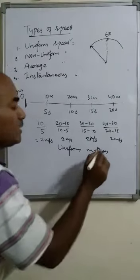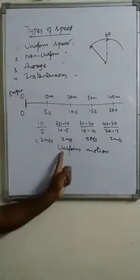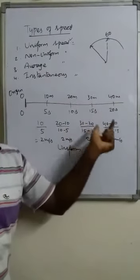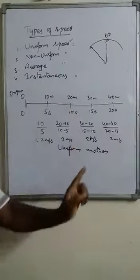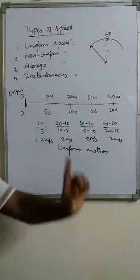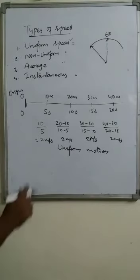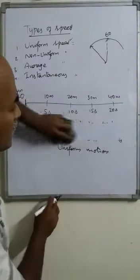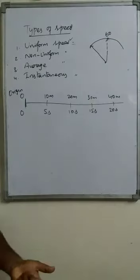This is how uniform motion is defined. When an object covers equal distance in equal intervals of time, it is said to be in uniform motion. We can also define it this way: if an object travels with the same speed or constant speed throughout the motion, it is said to be in uniform speed or uniform motion. Now, coming to non-uniform motion. From the word itself, we can say the speed is not constant — it is a non-uniform speed.